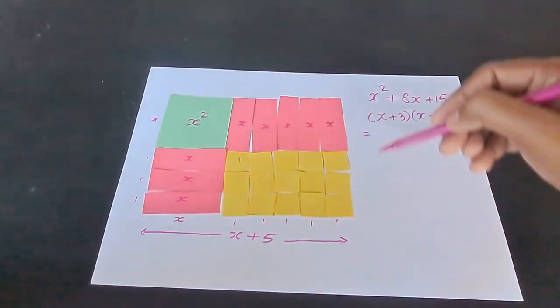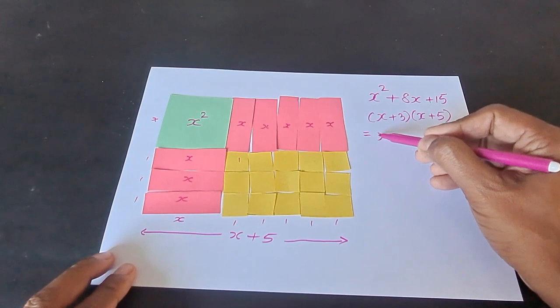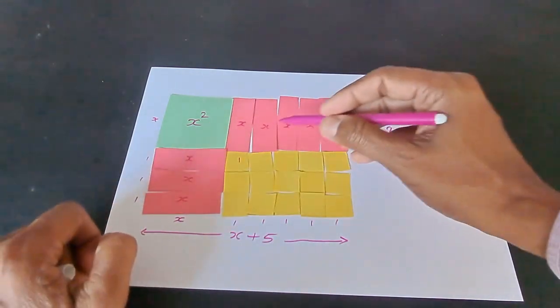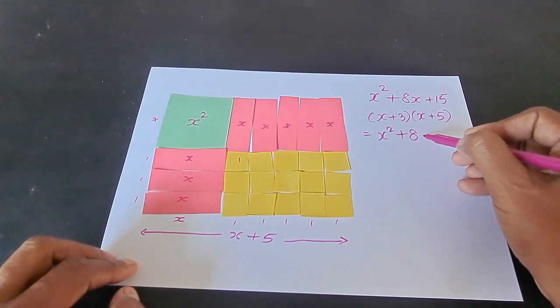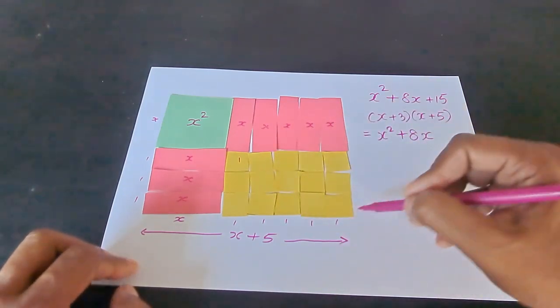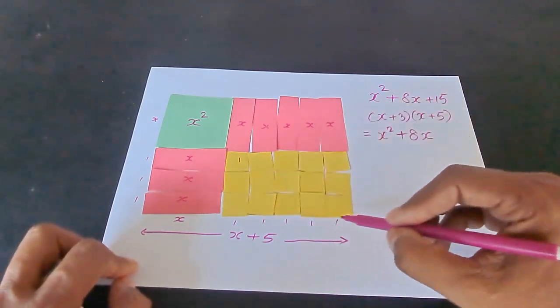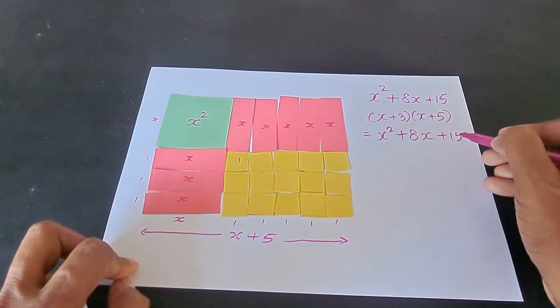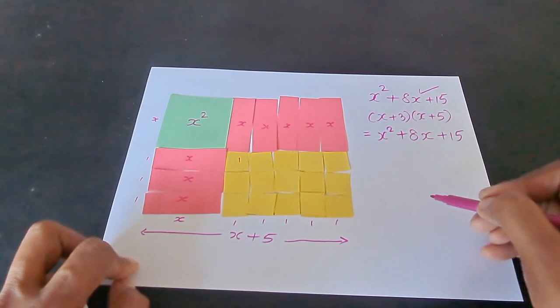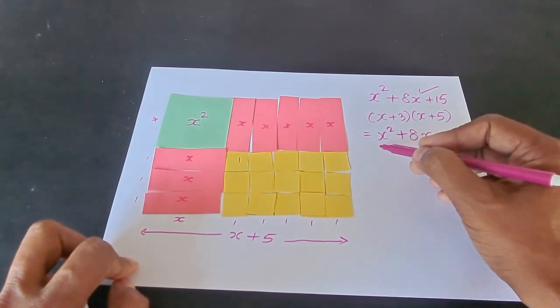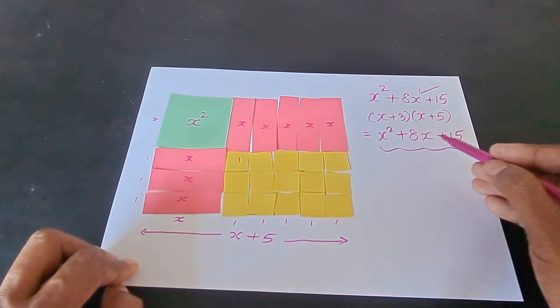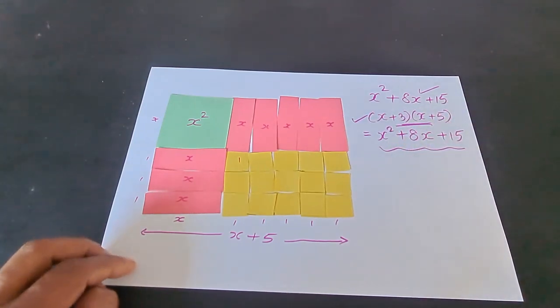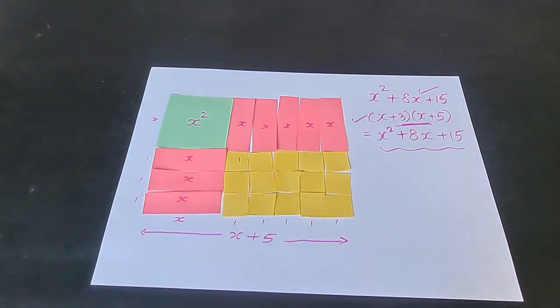So, if you combine the area, this is x square plus how many x's we have here? We have 5 plus 3, 8 x's and 15 small pieces that is 15 units area in the small squares. So, we have the required polynomial and therefore, the factors of x square plus 8x plus 15 are x plus 3 and x plus 5 and that completes our activity.